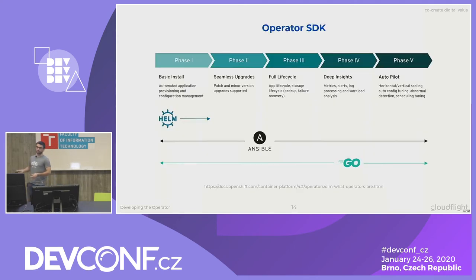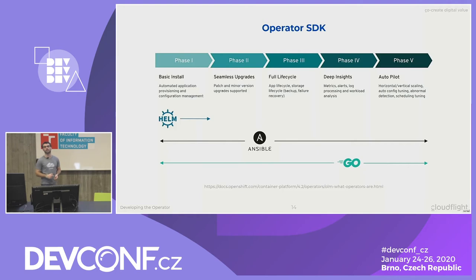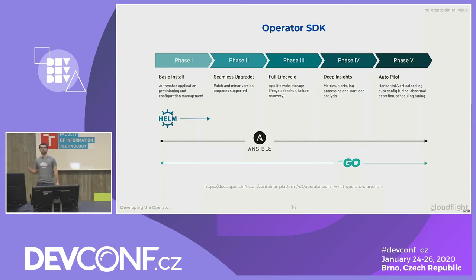The Operator SDK provides a nice graph listing the capabilities of operators. It comes with three operator types out of the box: a Helm operator, an Ansible operator, and a Go operator, which support different levels of integration with the Kubernetes system. This is a pretty popular graph you'll find when searching for operators anywhere.